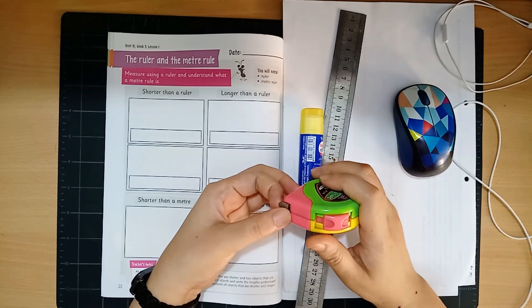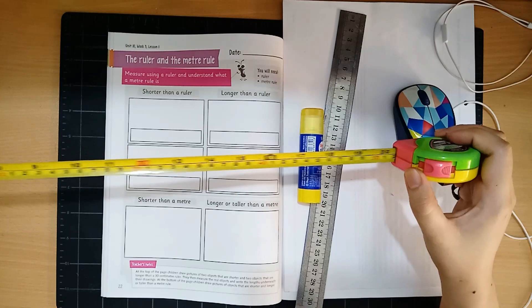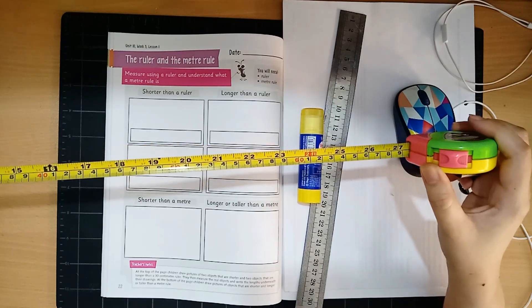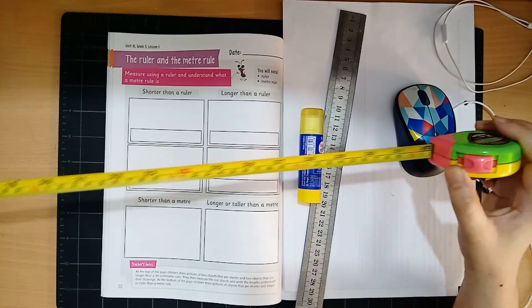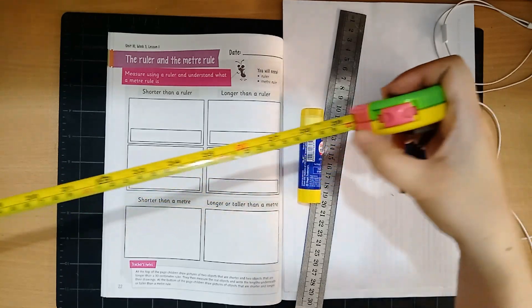This is called a meter tape and when you pull it you can actually elongate it and you will have a meter. So you can stop when it says one meter over here.